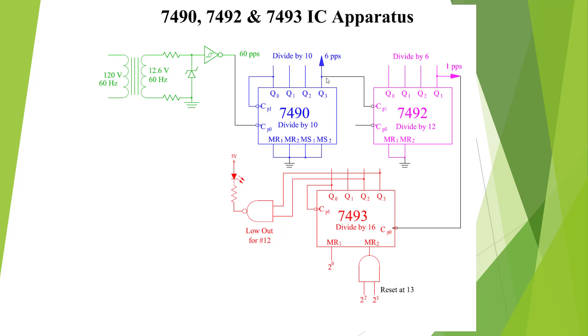This guy is going to divide by 10, and we're going to get 6 pulses per second into our 7492, and we're going to divide it by 6, and we're going to get 1 pulse per second. And we're going to put in a divide by 16, and every 12 seconds, we're going to get this LED. Semi-useless, but it does demonstrate the possibilities that these devices have.